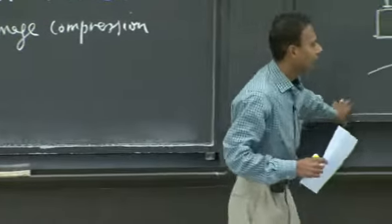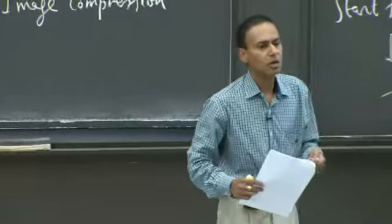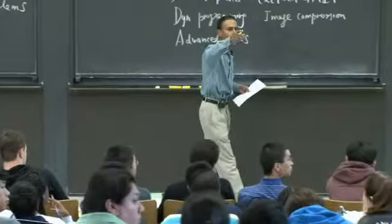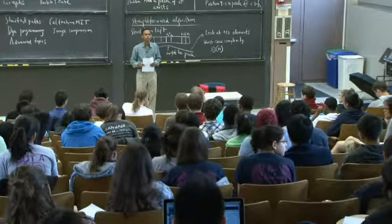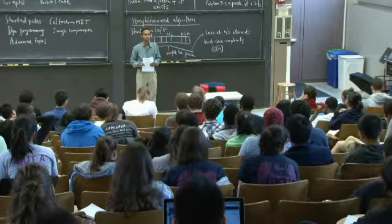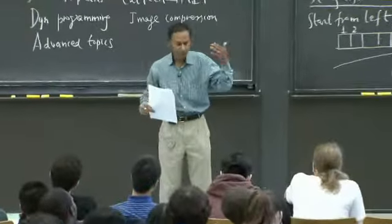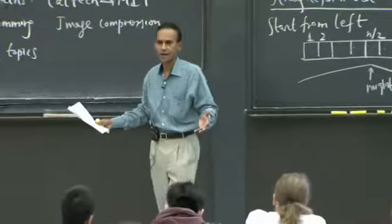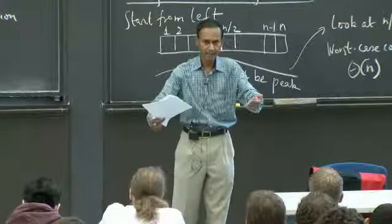How can we lower the asymptotic complexity? A student suggests: do a binary search — look at the middle element, and whichever side is higher, cut that in half, because you know there's a peak somewhere in that half. You continue cutting in half. Exactly right — we can use a divide and conquer strategy, recursively breaking up the array into smaller arrays to get the complexity down.